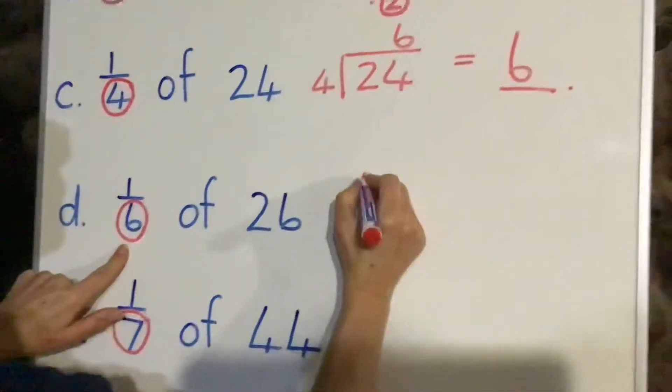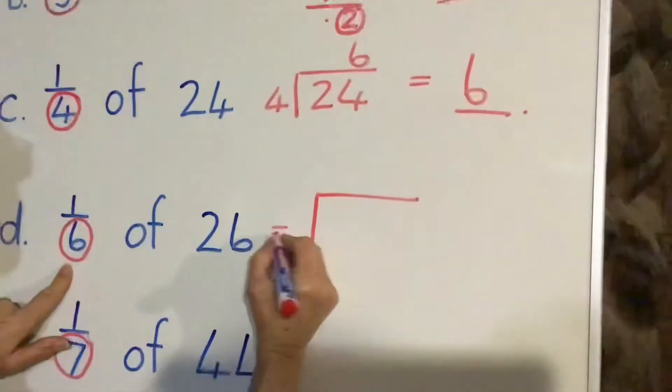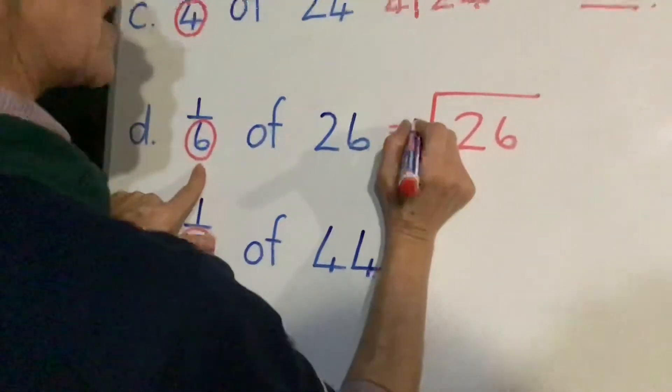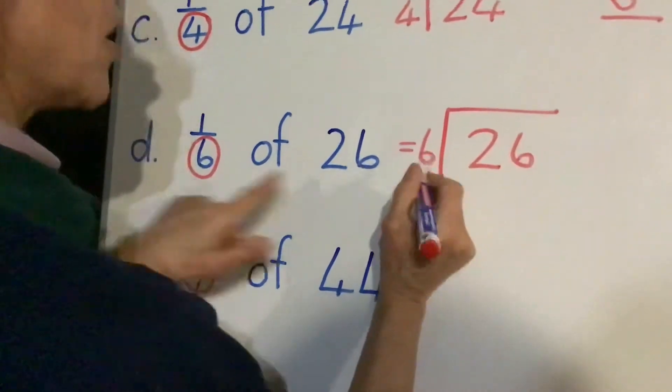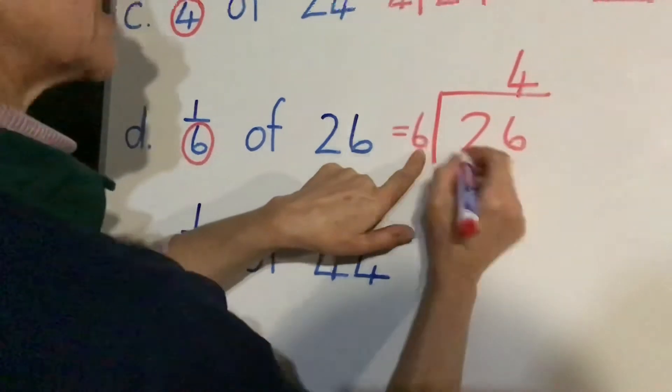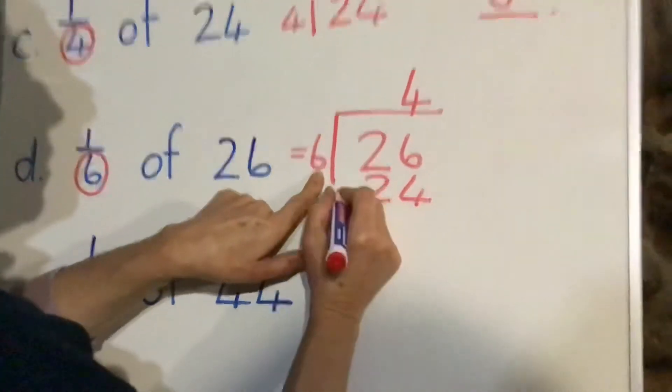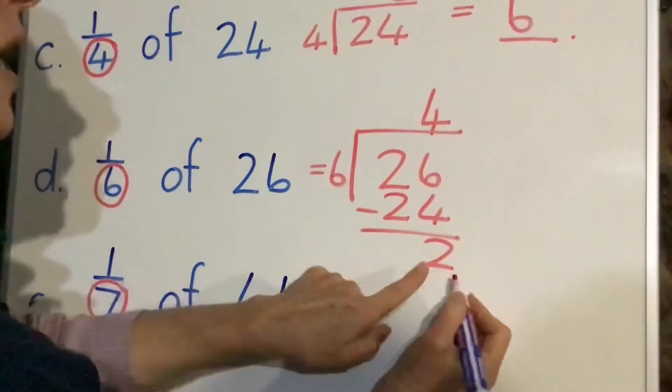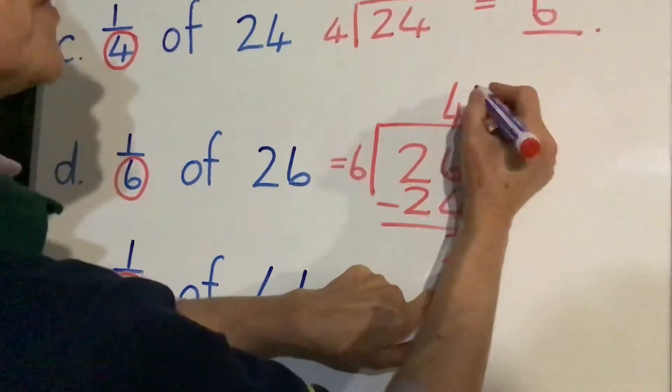Now let's look at 1 sixth of 26. Let's see what happens over here. We put 26 in the box, we put our 6 outside the box. We're going to divide according to our tables. We know 4 times 6 gives us 24, so let's minus. Six minus four gives us 2, so that's our remainder.